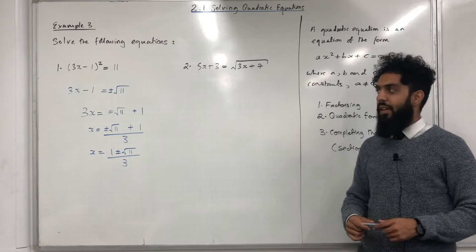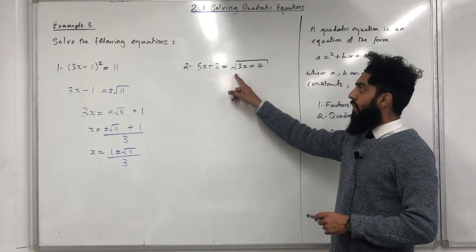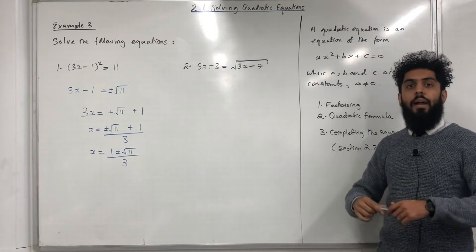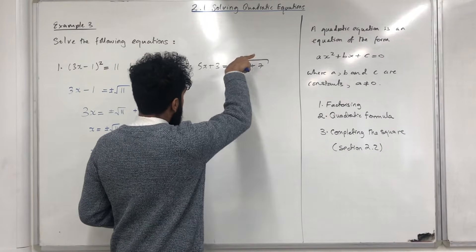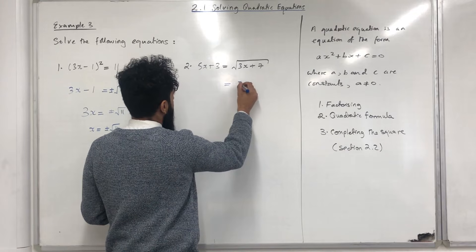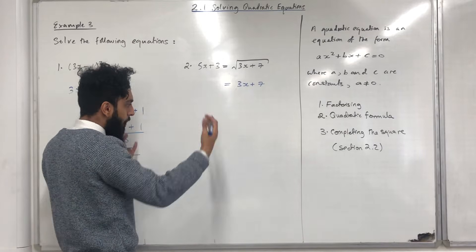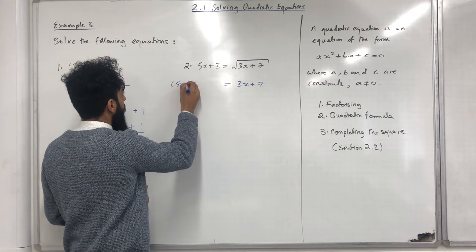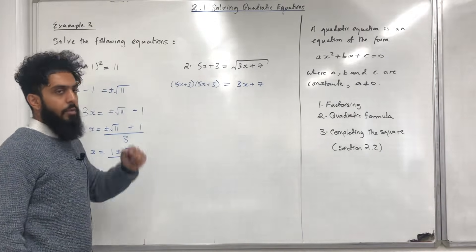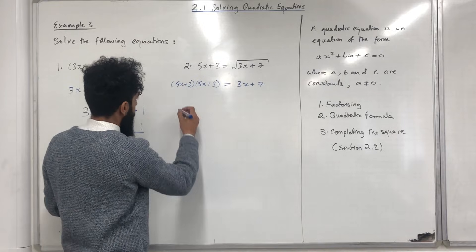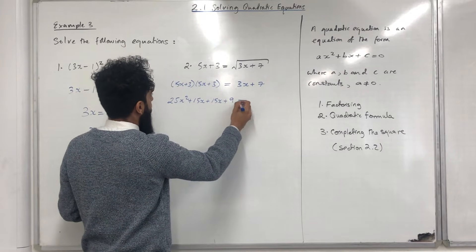Moving on to the second equation: 5X + 3 = √(3X + 7). I'm going to solve this by first getting rid of the square root on the right-hand side by applying a power of 2 to both sides. Squaring the right-hand side gives 3X + 7. Squaring the left-hand side gives (5X + 3)², which is (5X + 3)(5X + 3). Expanding gives 25X² + 15X + 15X + 9 = 3X + 7.